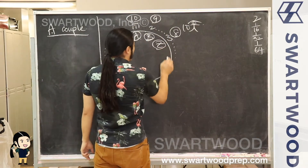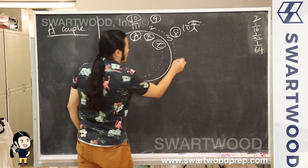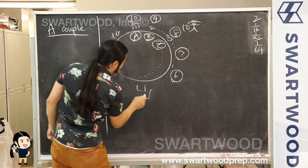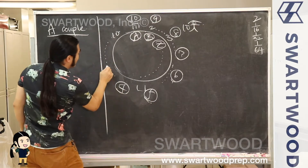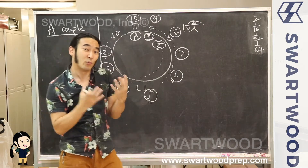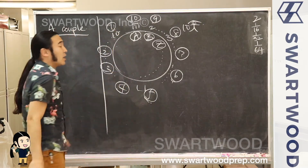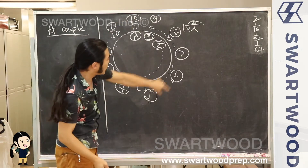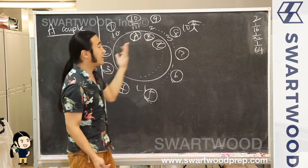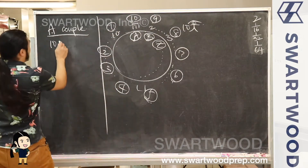We can put letter Z here, etc., all the way around. You can see that's going to be ten, nine, eight, all the way down — times seven, times six, times five, times four, times three, times two. And when we get to seat number ten, there'll only be one seat left and one person left, so there's only one choice. That's going to be ten factorial.